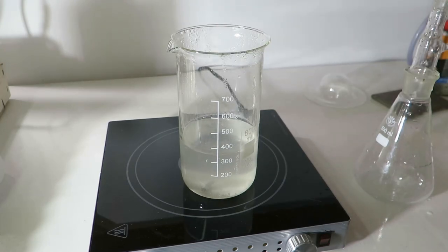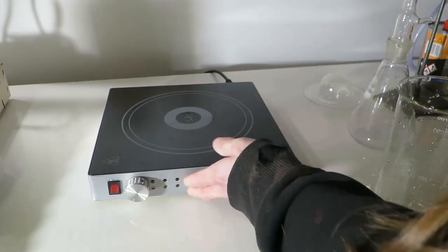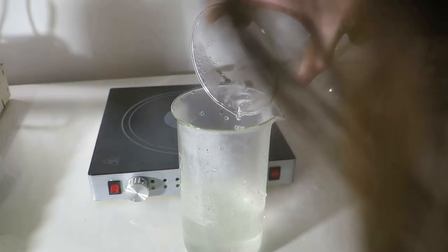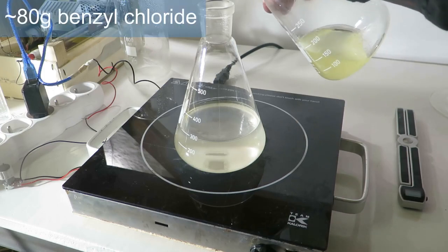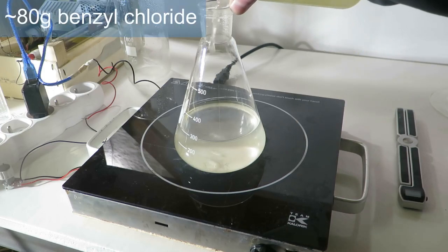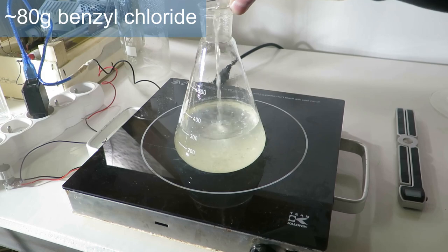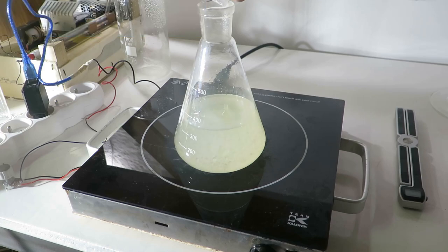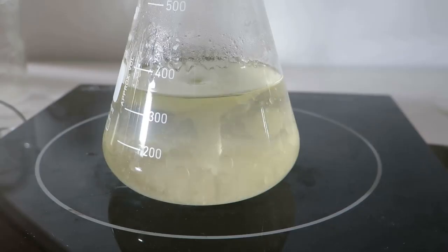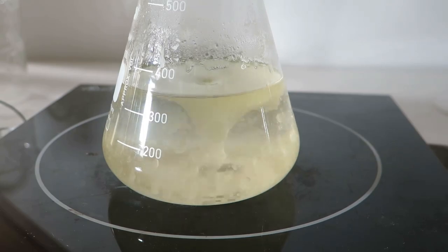After everything has dissolved, I decanted the solution. You can clearly see that there was some junk in the tablets. I guess it looks like sand, it feels like sand, probably is sand. To this hexamine solution I will add 75ml of benzyl chloride. Then start stirring and reflux for a few hours.